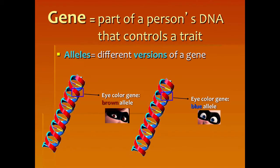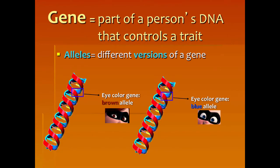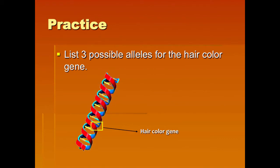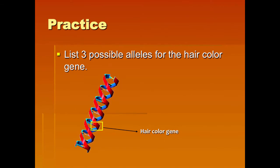A gene is a part of a person's DNA. There are two different types of each gene, and we call these alleles. Alleles are the different versions of a gene. For example, I have an allele for green eyes and an allele for blue eyes. In the Robinsons, the mother has an allele for brown eyes because she has brown eyes, but her son had blue eyes, meaning she also must have the allele for the blue eye gene. Every gene can come in two versions. Now pause and list three possible alleles for hair color.